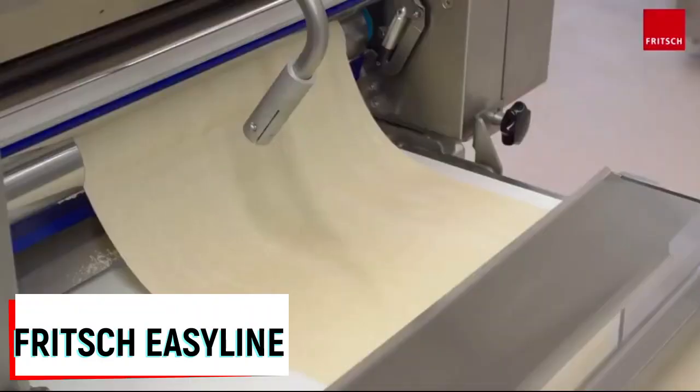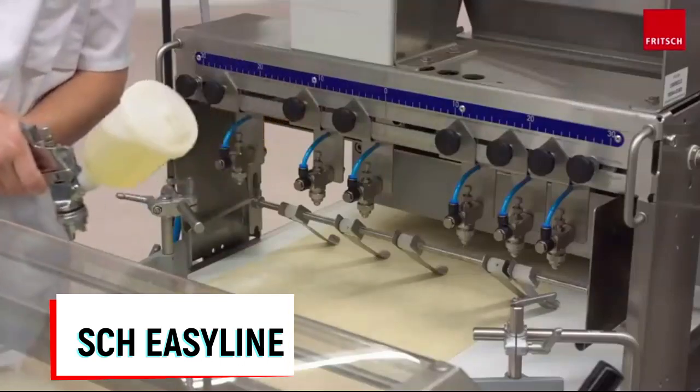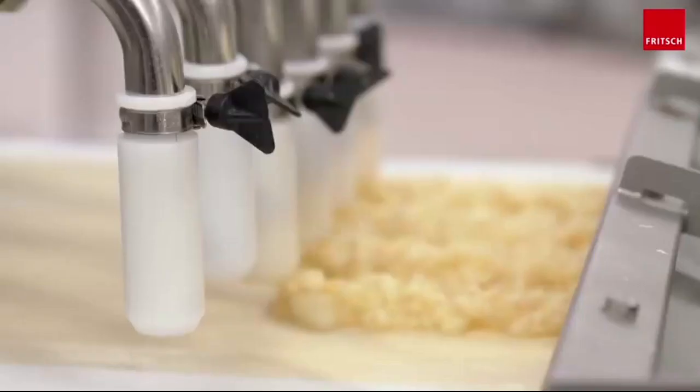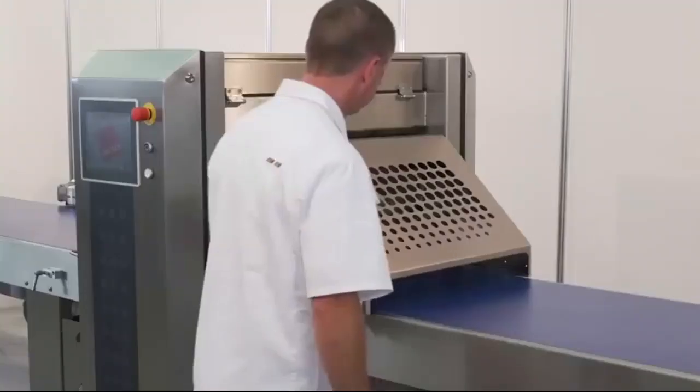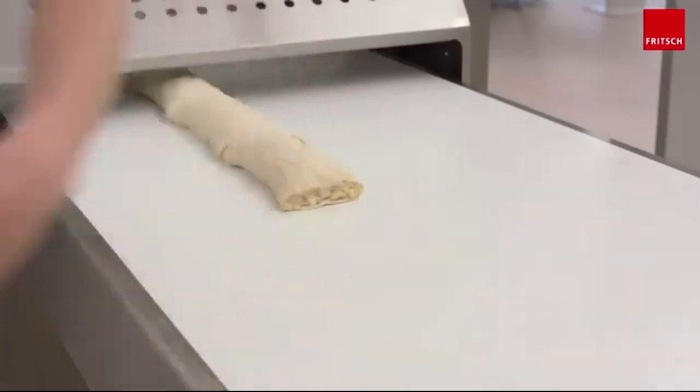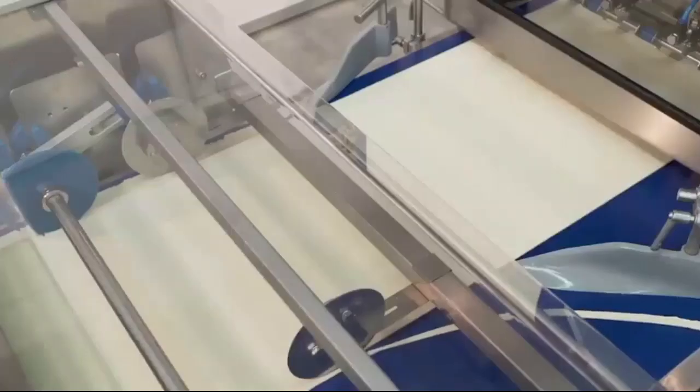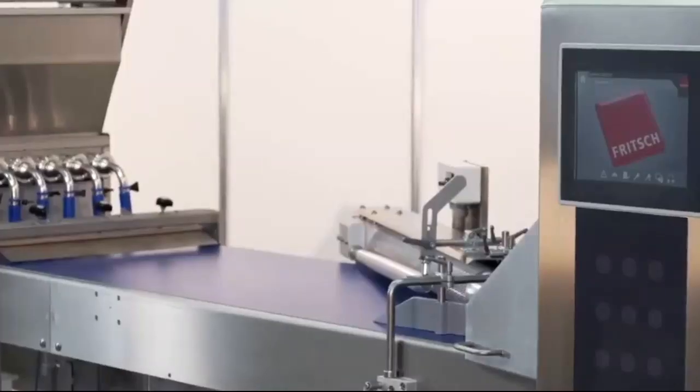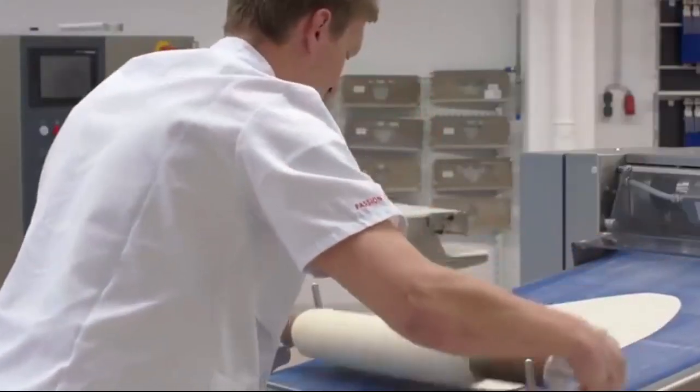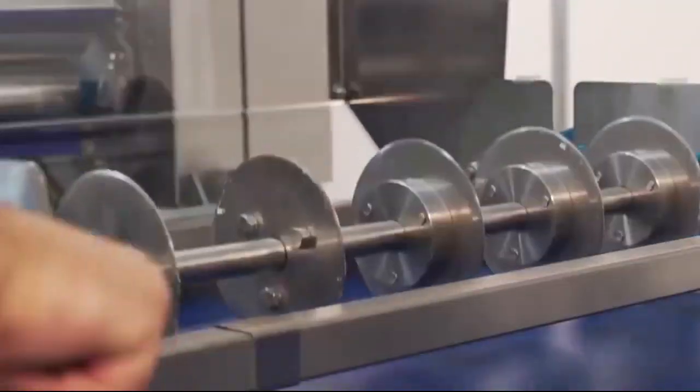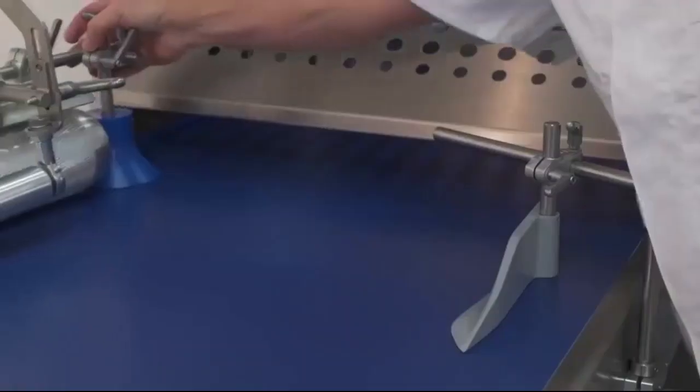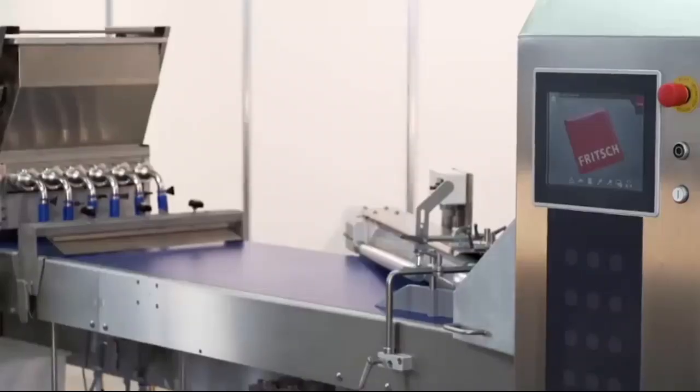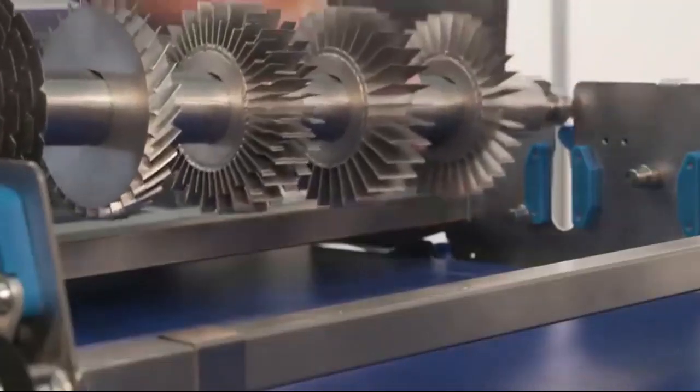Fritsch Easy Line. If you've ever wondered how pastry products such as strudels and stuffed buns are made on a production scale, you're about to get your answer. This is a processing line from the German company Fritsch. It can cut, fold, twist, fill and punch dough. That's why it can be used to create more than 10 different pastry products, from pretzels to rolls. The machine is designed for the needs of small and medium sized bakeries. There's minimal involvement of the operators in the process. They only carry out the maintenance such as cleaning, as well as the supply of raw materials and the assembly of the finished product.